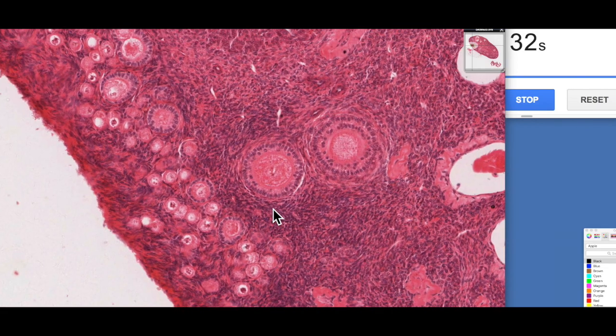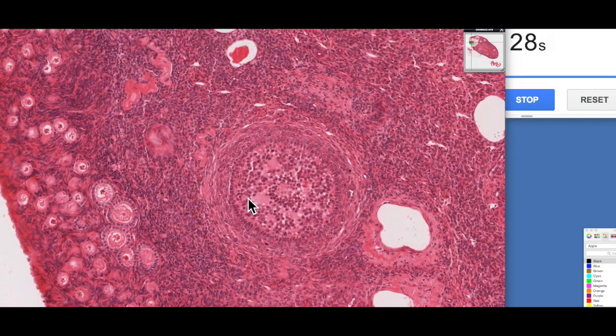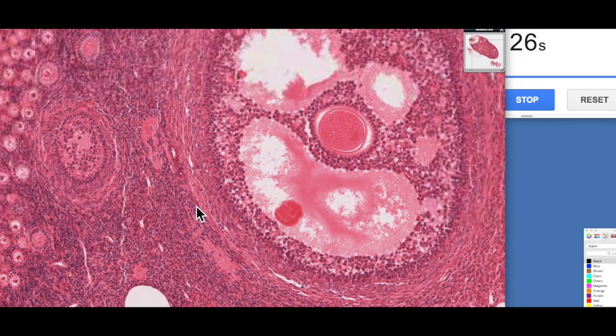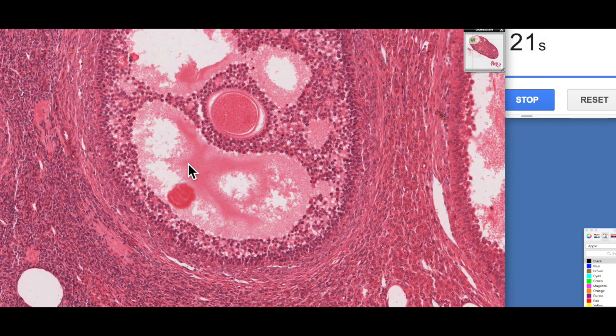But from then, the granulosa cells begin to secrete fluid. So if we zoom around, we can actually see some evidence of this fluid-filled space. This is known as an antrum. So once the fluid-filled space forms, these are known as secondary follicles.